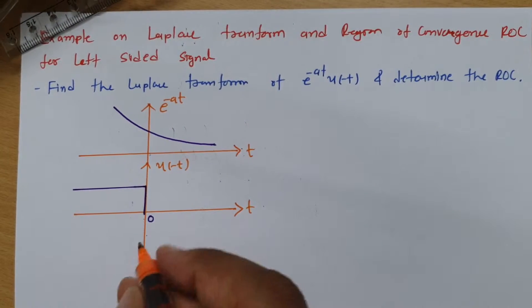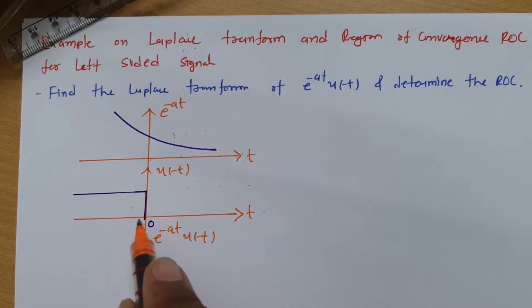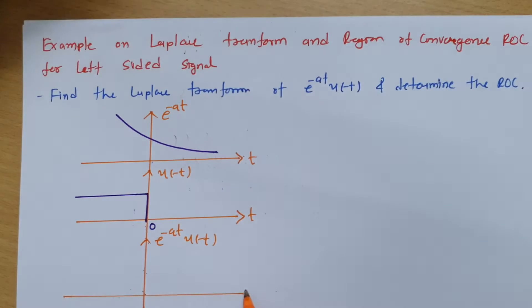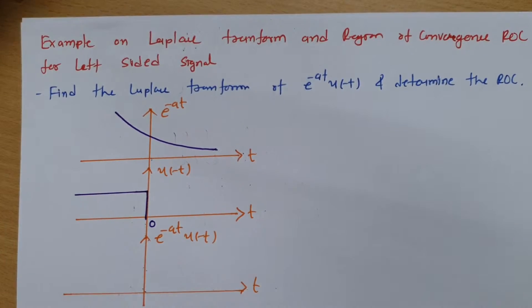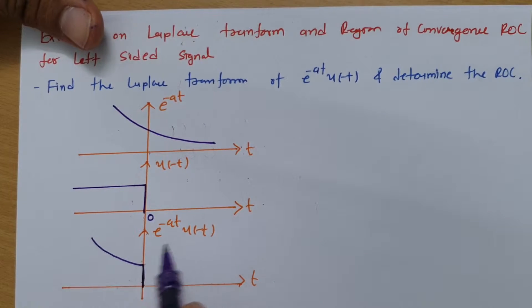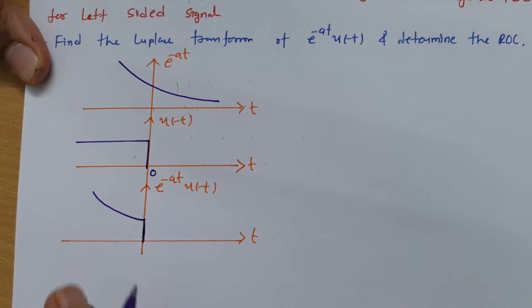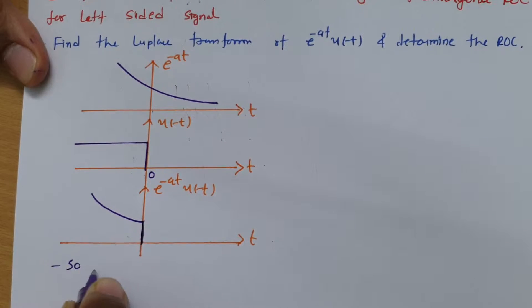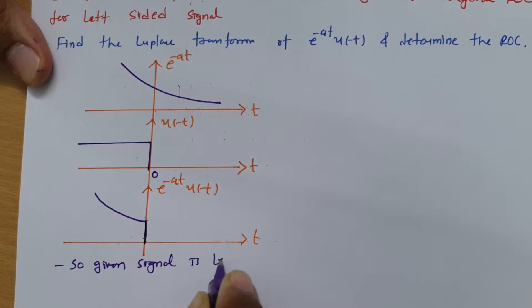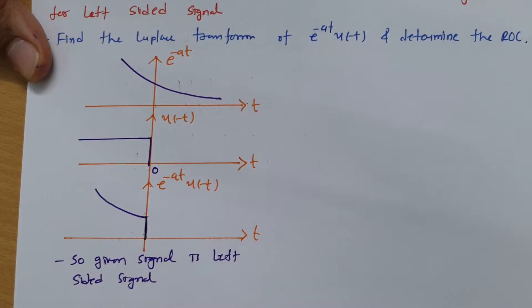So ultimately, multiplication of these two signals e to the power minus at u of minus t, for u of minus t in this direction there is no signal. So multiplication of these two signals will result into a signal like this. One can see clearly, this is a left sided signal.